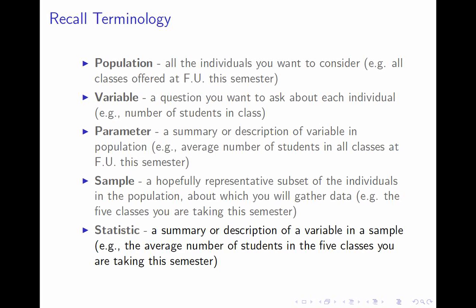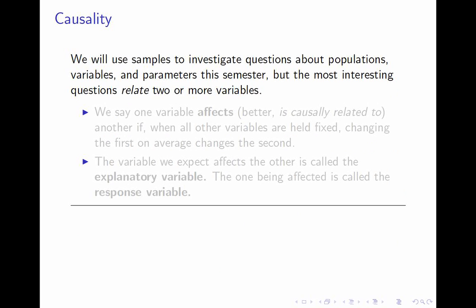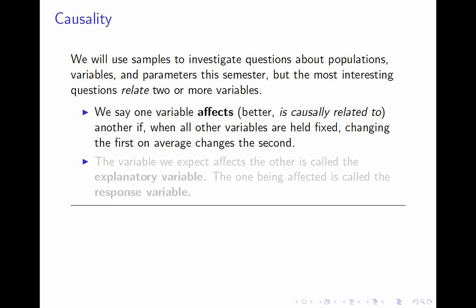But that's not what we're going to talk about today. Today I want to talk about the relationship between variables. Relationships between two variables are intrinsically more interesting than looking at a single variable at a time — the questions just become more interesting. The most important relationship we will care about is a causal relationship. We say one variable affects another if, when all other variables are held fixed, changing the first, on average, changes the second. That's called a causal relationship.